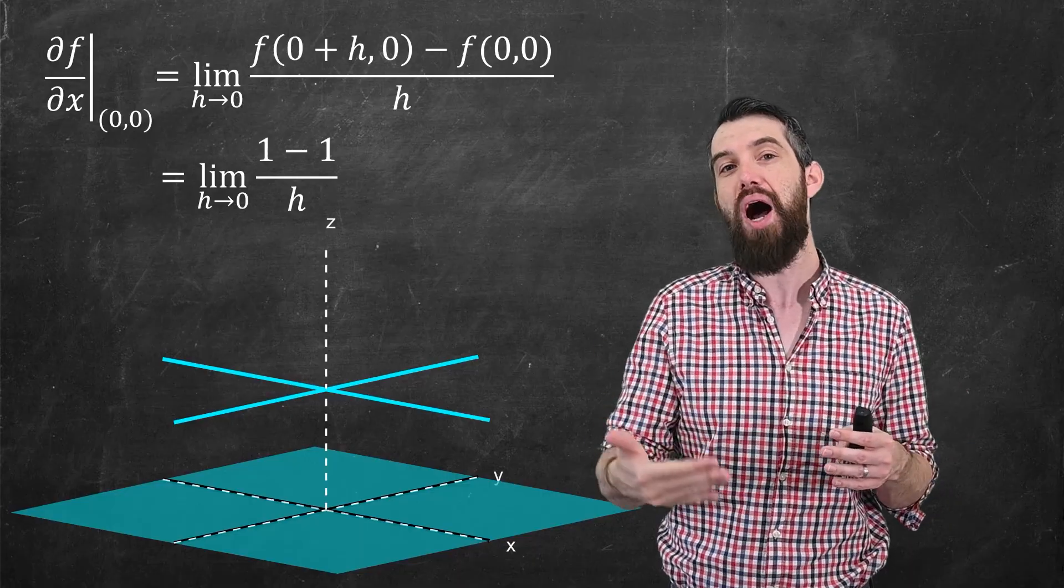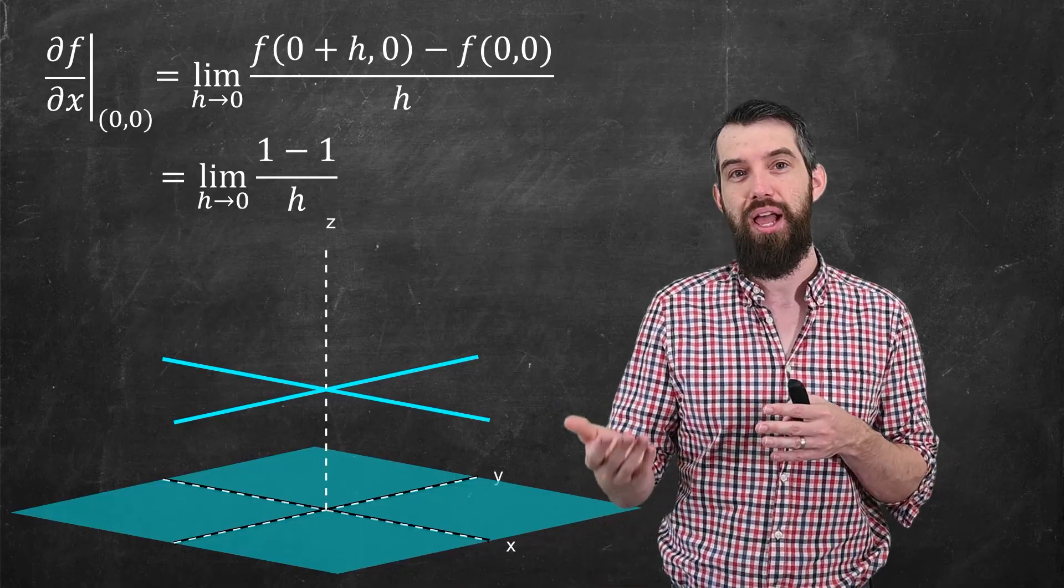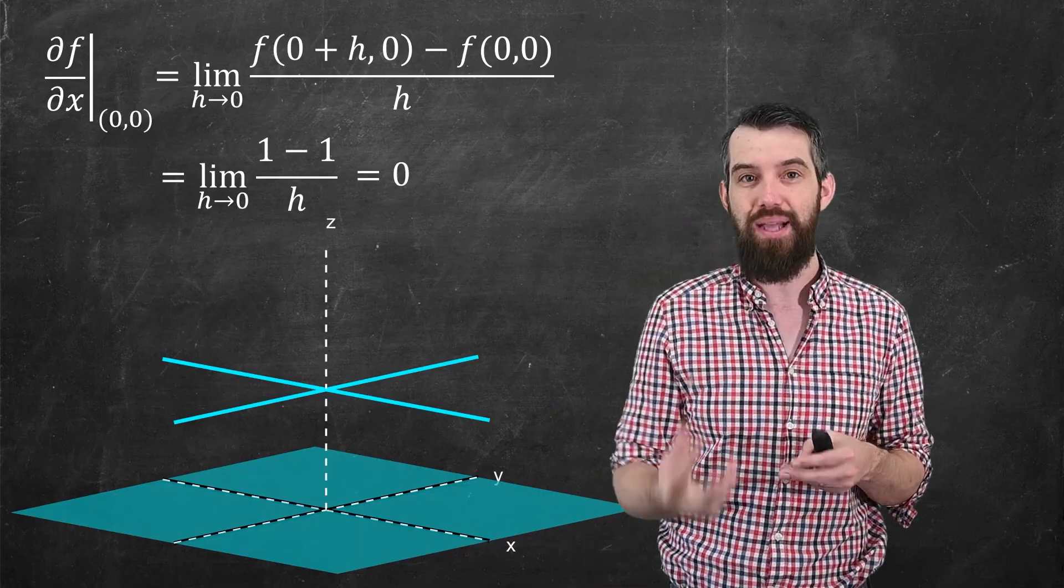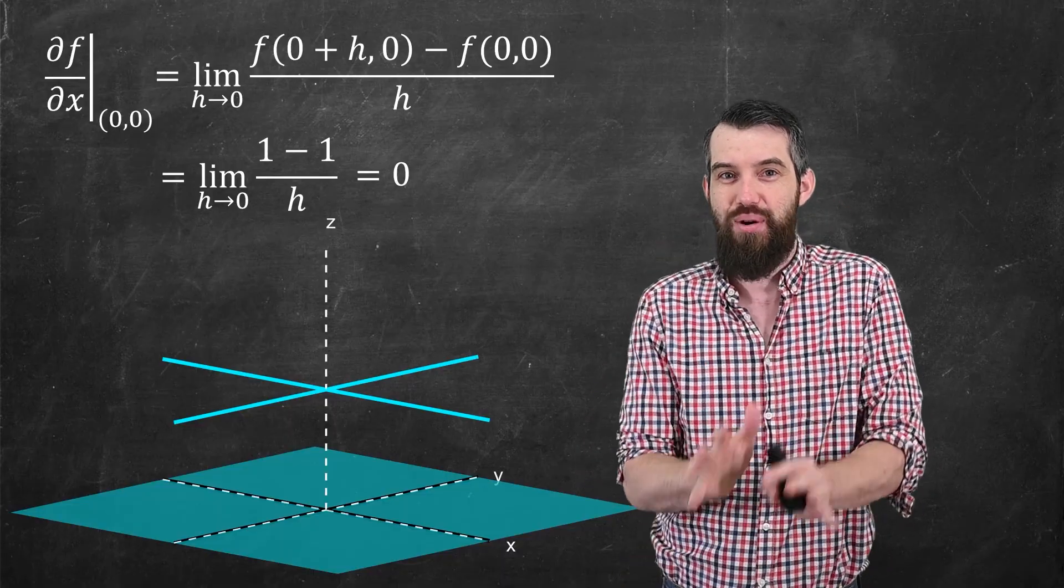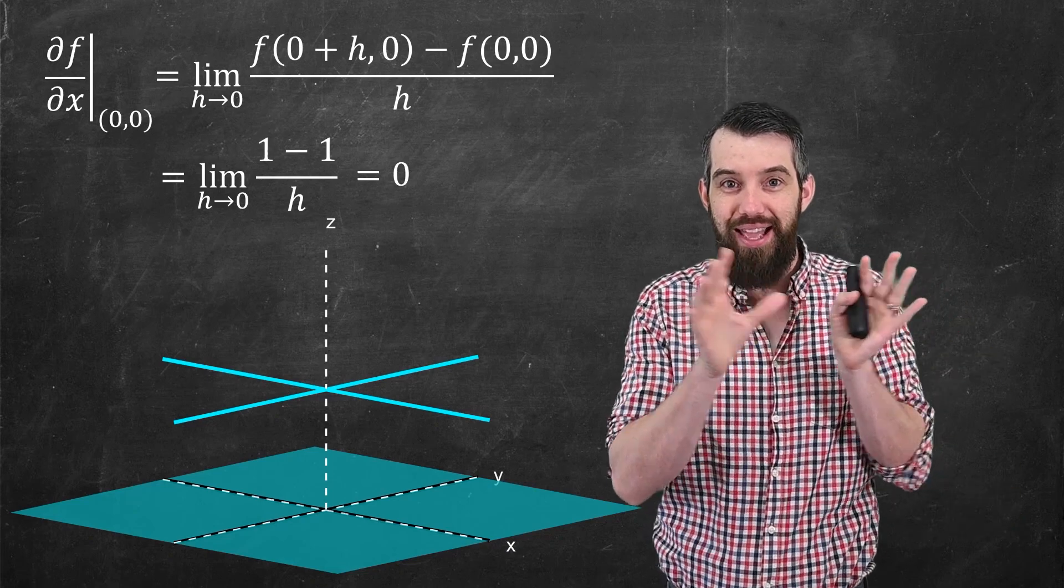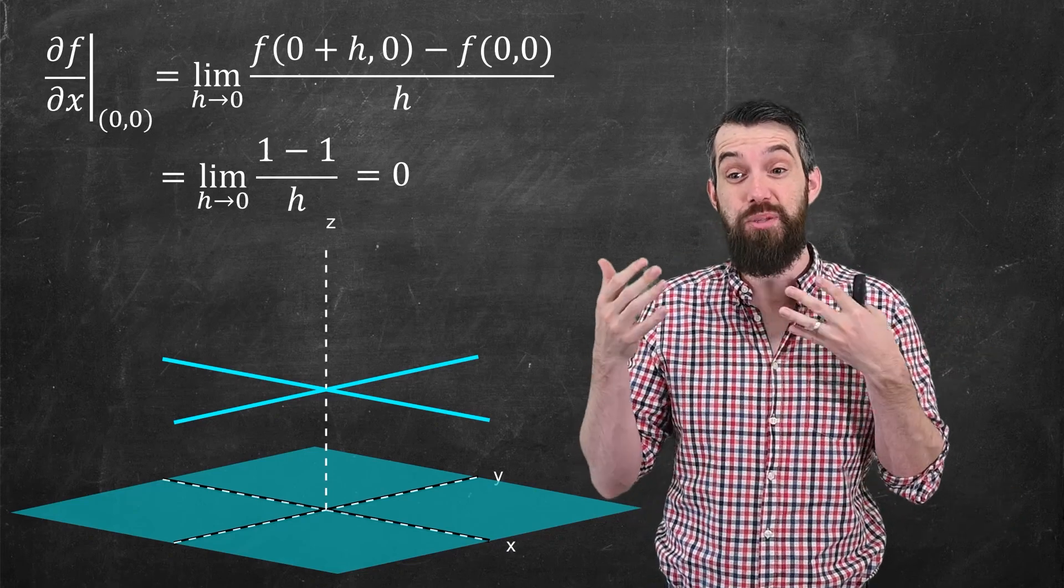So with any value of h that's non-zero, then we have 0 divided by something. Either way, it's always just going to be equal to 0. So this is surprising now. The partial derivative exists. It's equal to a specific number.